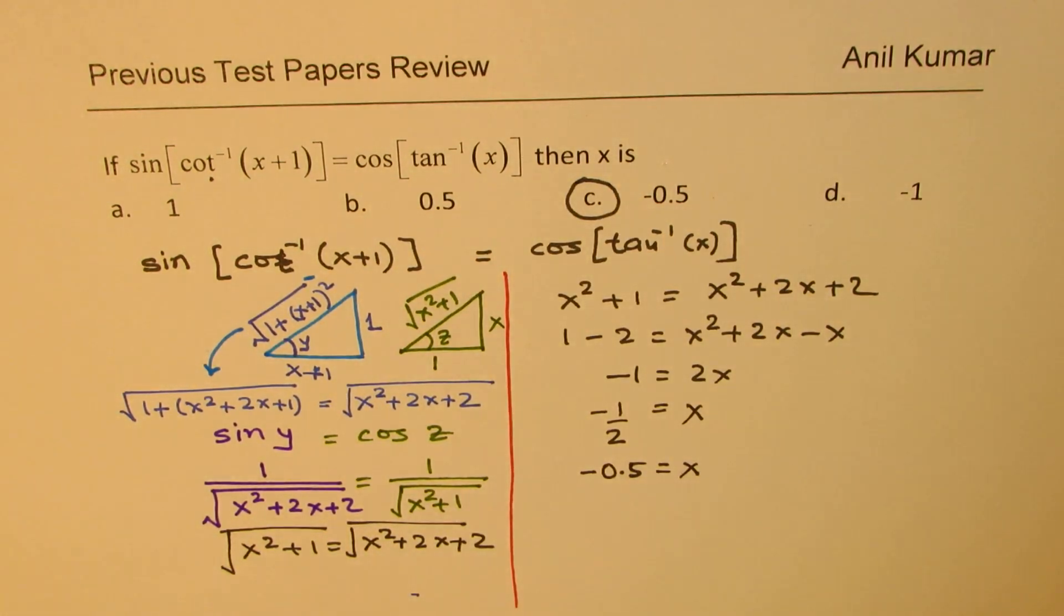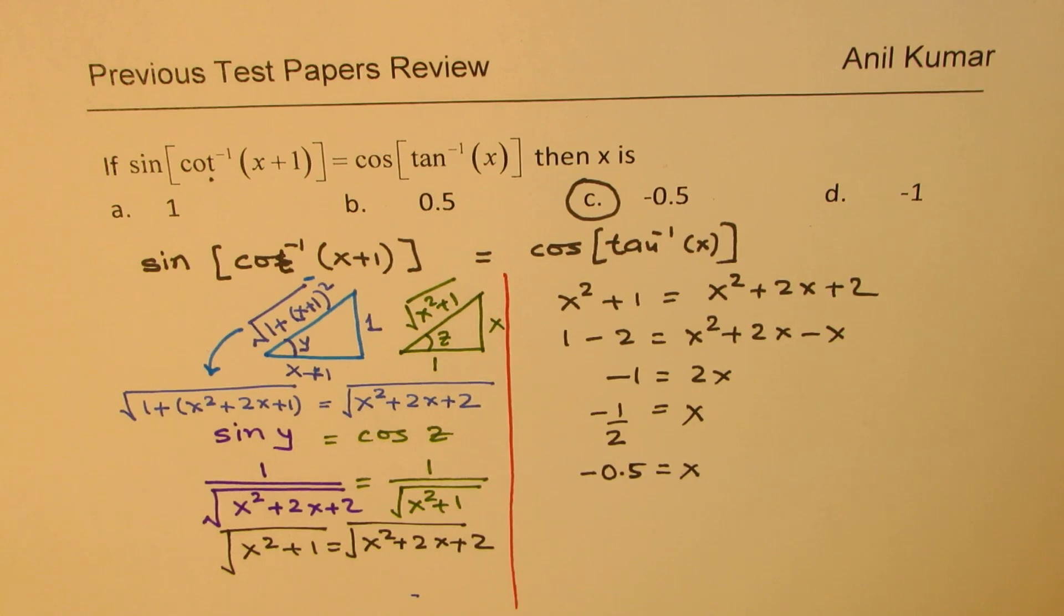So these questions can be solved if you look into them as we have shown here. The inside function basically gives you that triangle and the outside function gives you the value for that particular trigonometric ratio. Then you can equate these values and calculate the answer.